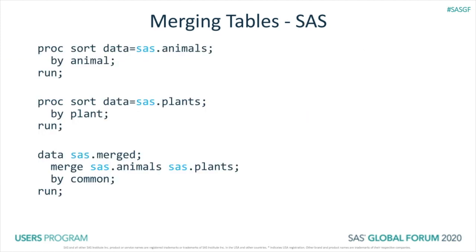Let's take a look at the SAS code for this and then the CAS code. In SAS, first we sort both the animals and plants data sets. Then we have a data step that merges them, and this is what the results look like.